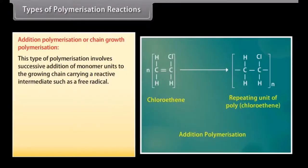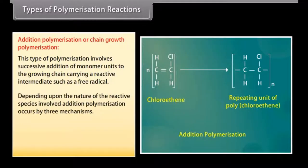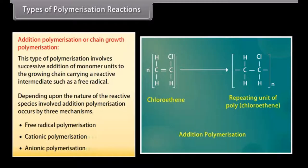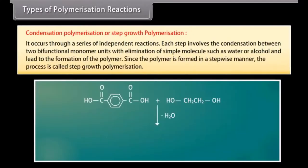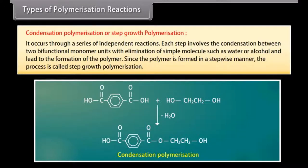There are two types of polymerization reactions. Addition polymerization, or chain growth polymerization, involves successive addition of monomer units to a growing chain carrying a reactive intermediate such as a free radical; it occurs by three mechanisms: free radical polymerization, cationic polymerization, and anionic polymerization. Condensation polymerization, or step growth polymerization, occurs through a series of independent reactions; each step involves condensation between two bifunctional monomer units with elimination of a simple molecule such as water or alcohol, forming the polymer in a step-wise manner.